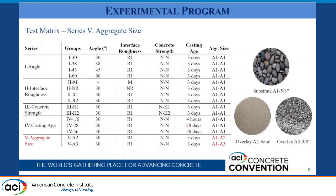Finally, for the last series, we investigate different maximum aggregate sizes. For our general mixture, denoted as A1, we used a coarse aggregate diameter of 5/8 inches for the substrate. For the overlay, we tested two different aggregate sizes: A2 substitutes the coarse aggregate with fine aggregate, and A3 substitutes the coarse aggregate with crushed concrete having a diameter of 3/8 inches.